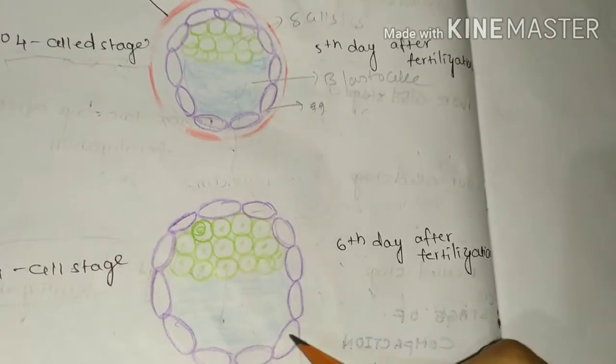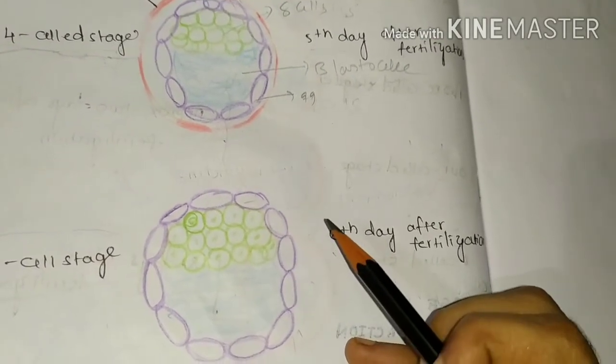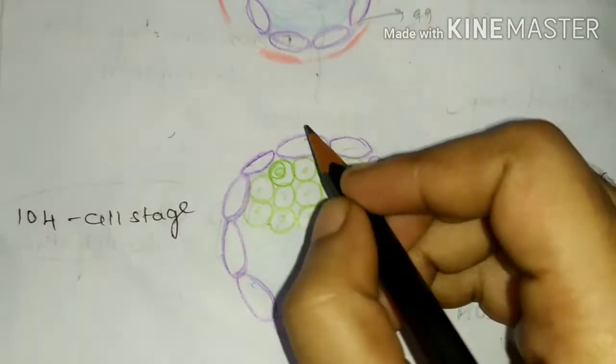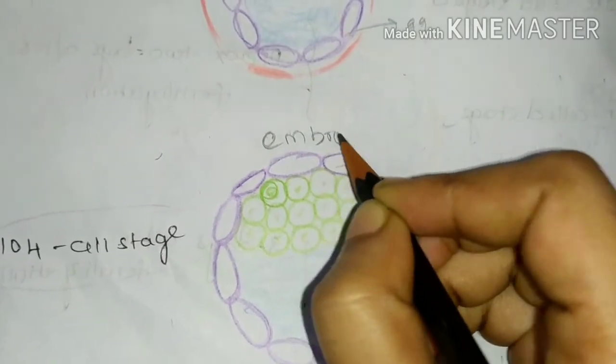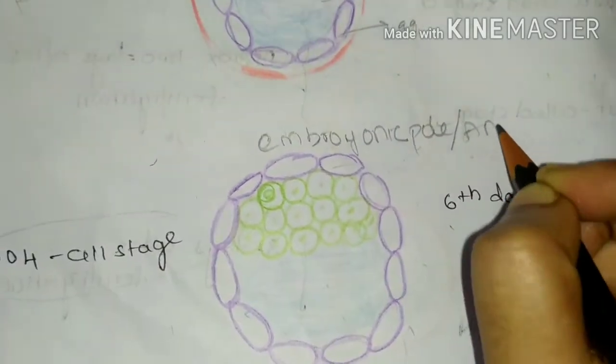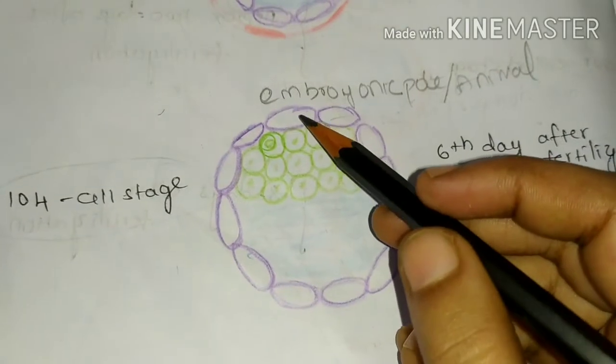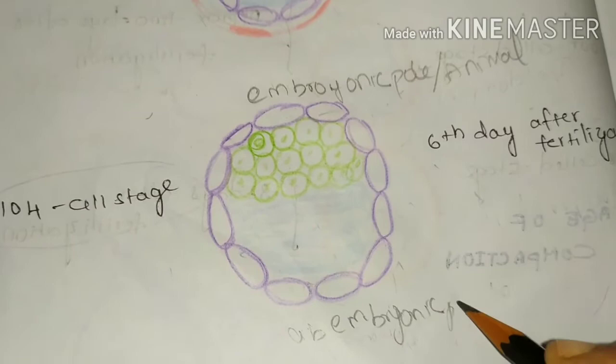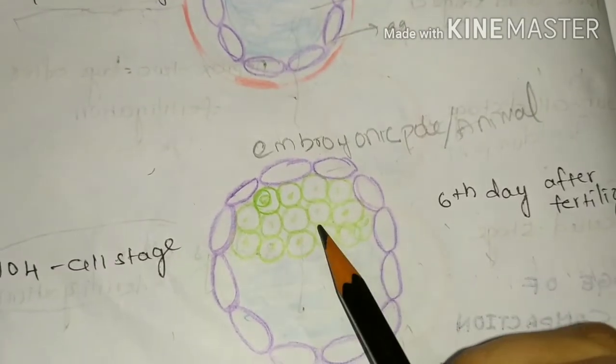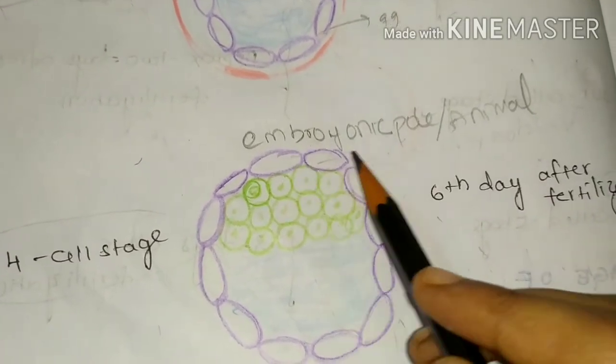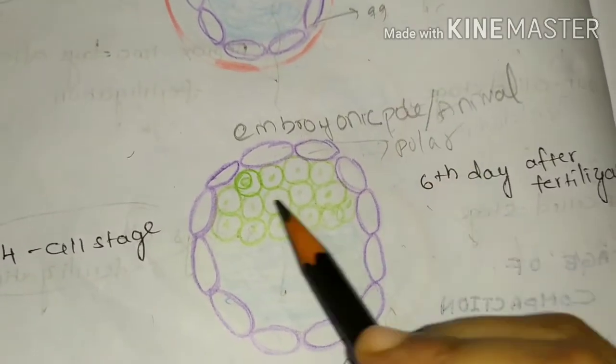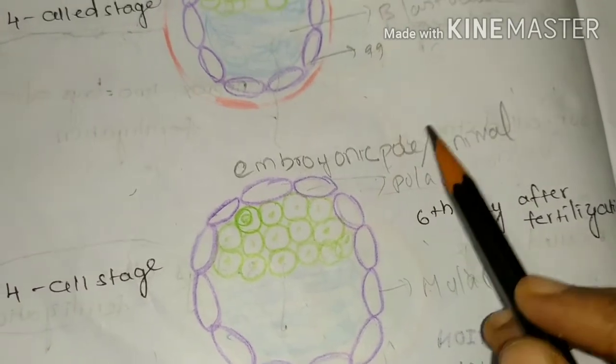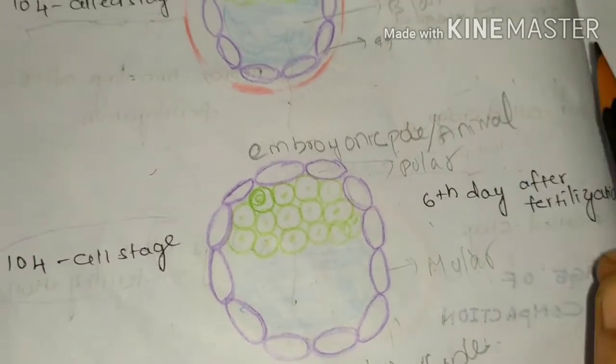Here, the trophoblast cells are able to pierce the uterine epithelium and enter into the endometrial stroma. And the side in front of this inner cell mass is called embryonic pole or animal pole. And the opposite side of this embryonic pole is called abembryonic pole. And the trophoblast in front of this inner cell mass is called polar trophoblast. And the remaining trophoblast is called mural trophoblast. This polar trophoblast is the trophoblast which pierces the uterine epithelium and enters into the endometrial stroma.